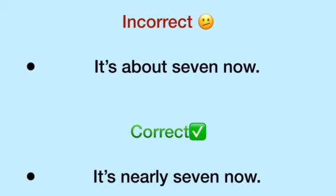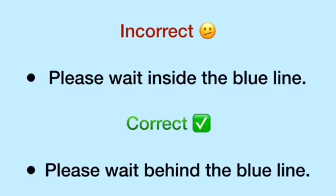Next: 'It is about seven now.' No. The correct sentence is: 'It is nearly seven now.'